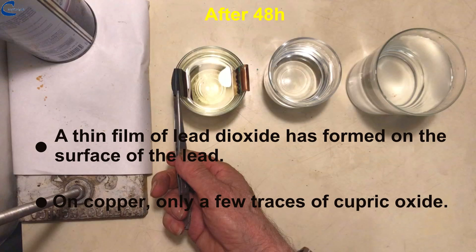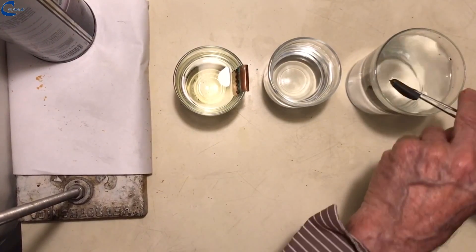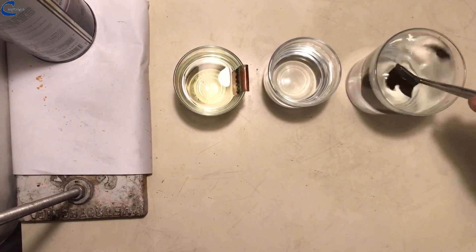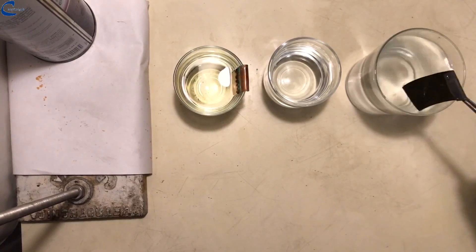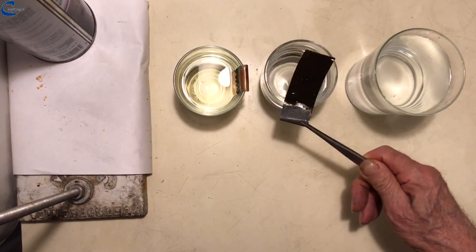After 48 hours of immersion in bleach, I extract the lead electrode and on its surface is clearly visible a thin film of lead dioxide with a characteristic brown color. This is a great way to oxidize lead.